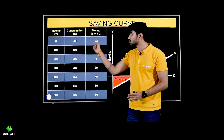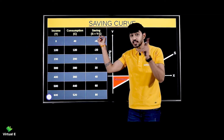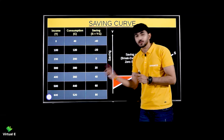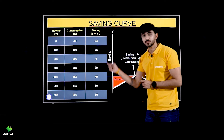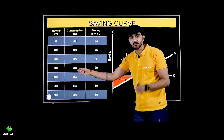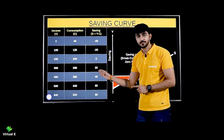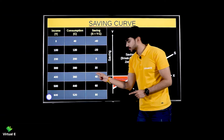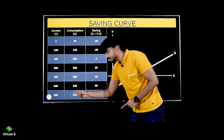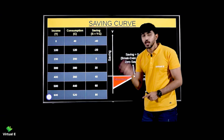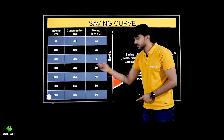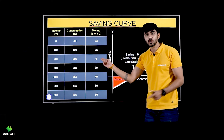Before this break-even point, what have you seen? Your savings is negative — that means dis-saving. Here at the break-even point you have zero savings. After that, all your savings are positive. For example: 300 minus 280 gives saving of 20; 400 minus 360 gives 40; 500 minus 440 gives 60; and 600 minus 520 gives 80. So basically we have seen three phases: first negative saving, second zero saving, and third positive saving.